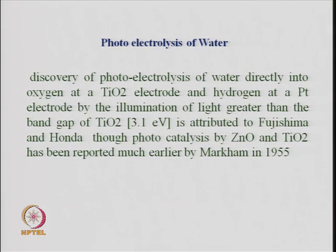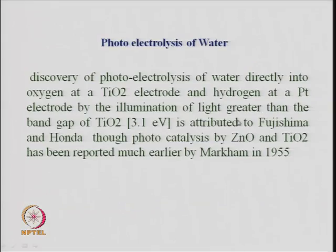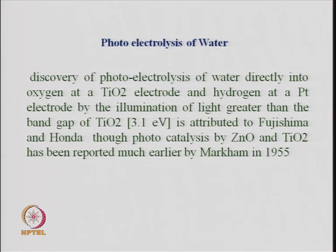People have been working on titanium dioxide as the material at the electrode where oxygen is generated for a long time, and platinum is the other electrode where hydrogen is generated. Both electrodes are in aqueous medium, so from water you are generating oxygen and hydrogen — this is water splitting in an electrochemical cell, called photo electrochemical splitting of water or photo electrolysis of water.